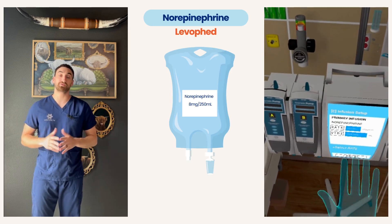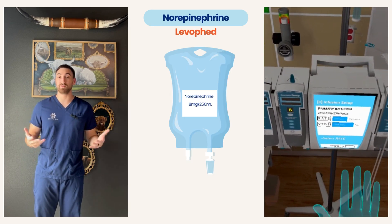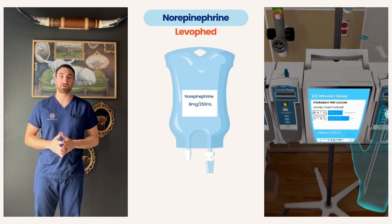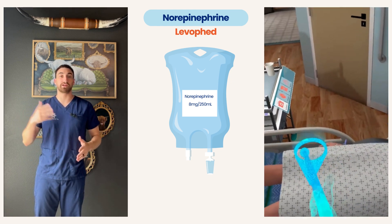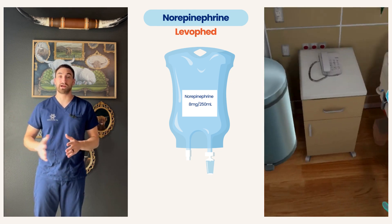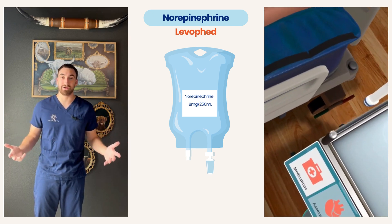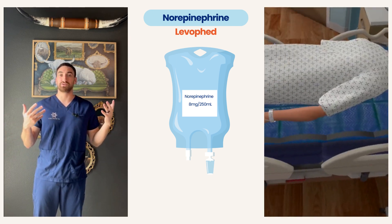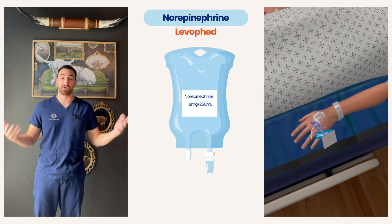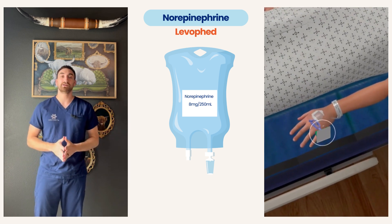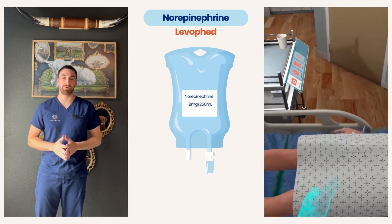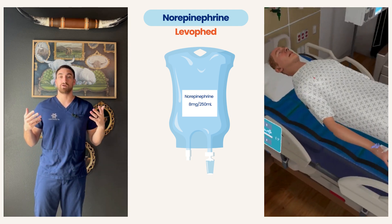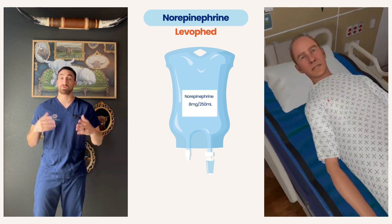That was me using VR to titrate levophed on a sepsis patient. In this course, we're going to go over titrating drips. We're creating a new series because one thing I did not have coming out of nursing school is understanding how to actually titrate drips, especially when they're running together. We're going to start with vasopressors, and one of the most common vasopressors we hang is called norepinephrine or levophed.